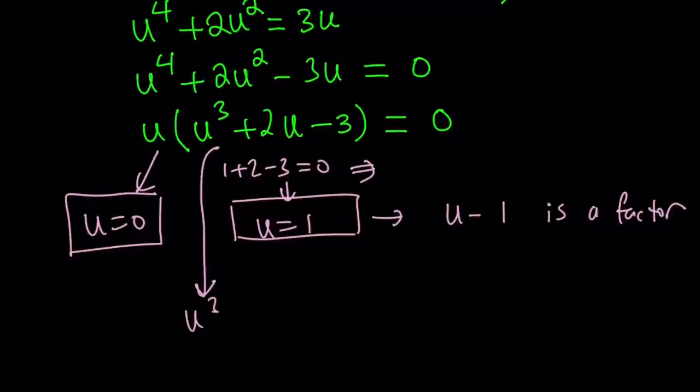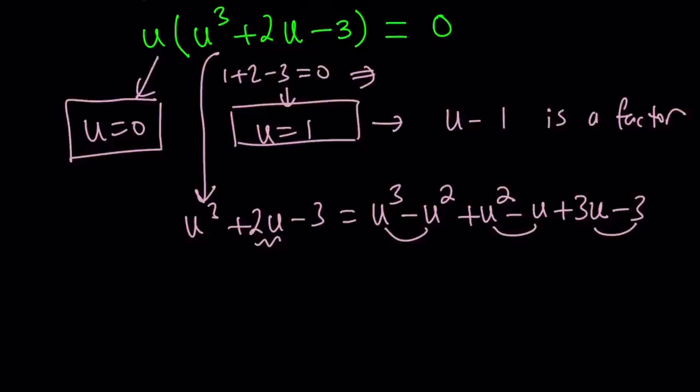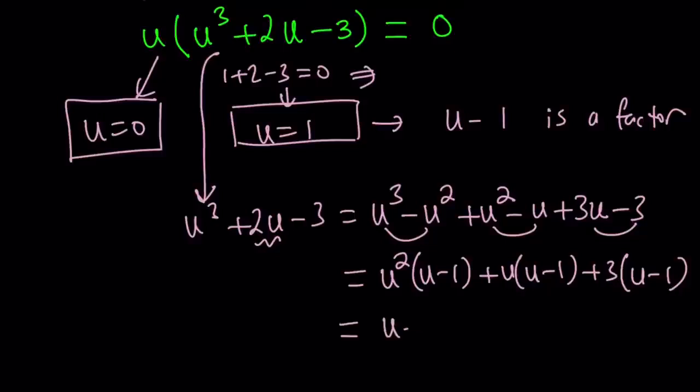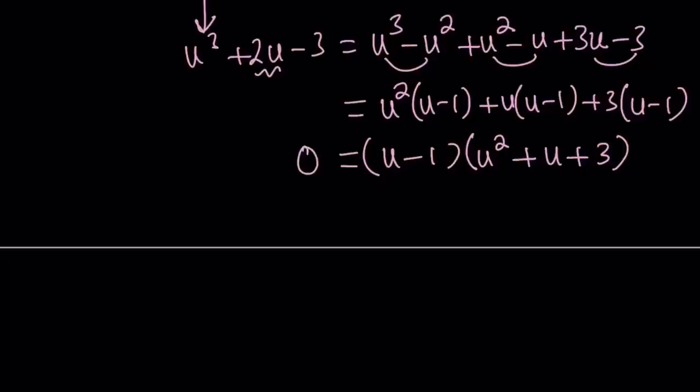Since u minus 1 is a factor, I can go ahead and write u cubed plus 2u minus 3 as u cubed minus u squared, and then plus u squared. And then I have 2u, but I do need a minus u here to make u minus 1 a factor. And then I have to make up by adding 3u because I have 2u. And then minus 3 will finish it up. Notice that this is factorable by grouping. So now you can write this as u squared times u minus 1, u times u minus 1, and 3 times u minus 1. Now our equation was almost factored. We can take out u minus 1 as a common factor. And then the second factor is going to be u squared plus u plus 3. So the cubic was factored into a linear and a quadratic, the product of two polynomials, which is nice because now we can set this equal to 0 and find more solutions.